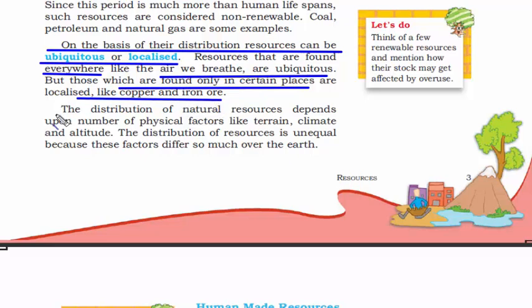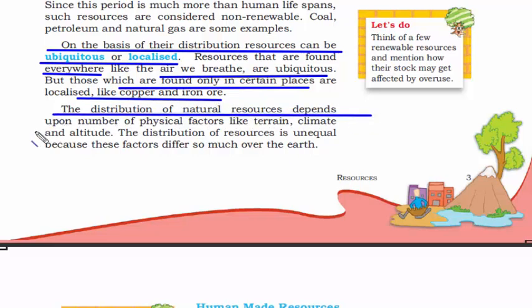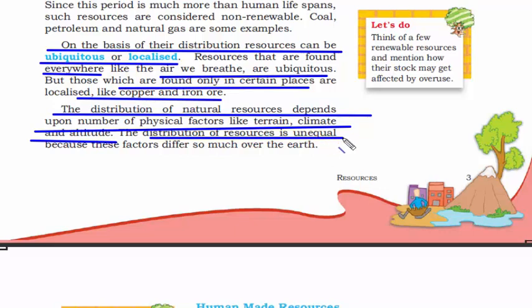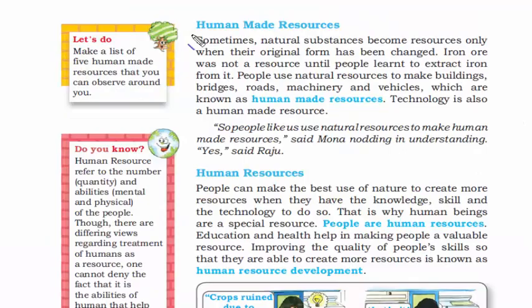The distribution of natural resources depends upon physical factors like terrain, climate, and altitude. Always remember, the distribution of resources is unequal — that's why iron ores and other mineral resources are found at specific places and not all over the country.